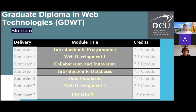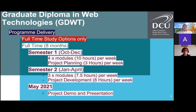The program is a full-time study option, meaning you're expected to devote all your time to achieving the graduate diploma. Semester one has four modules, roughly equating to 10 hours of contact per week with lectures, tutorials, and labs, plus project planning to determine what your project will be about and some team building. In semester two, you do the development work — about eight hours per week of background research, building components, testing them, and integrating them until you have a fully fledged project by the end of the semester.